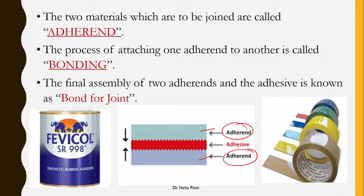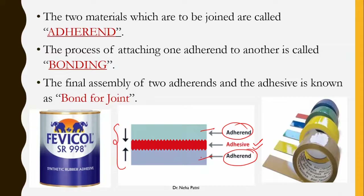Those two materials which are to be joined with the chemical compound are known as adherents. The compound you are going to use is the adhesive. The overall process of making this particular product is called bonding, where you attach the adhesive and adherents together. This final assembly of two adherents and adhesive is known as a bond or joint.